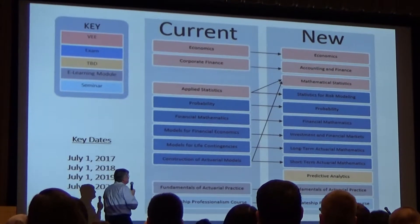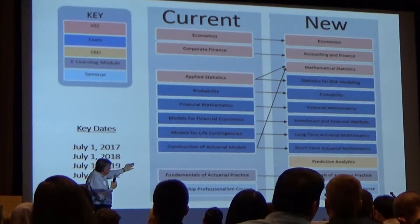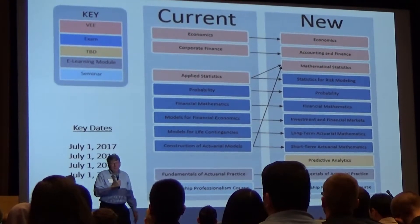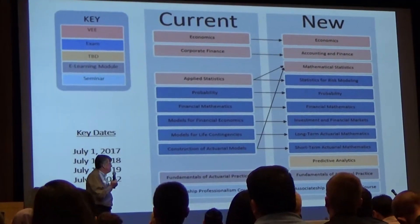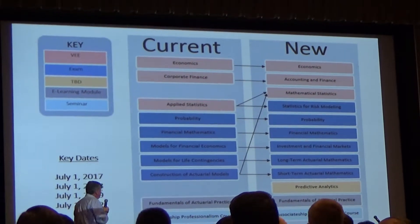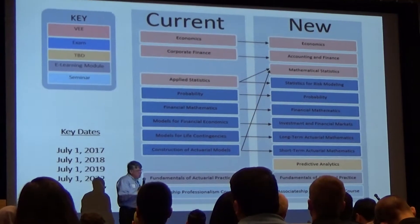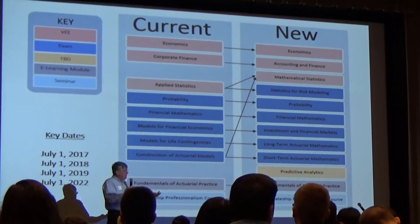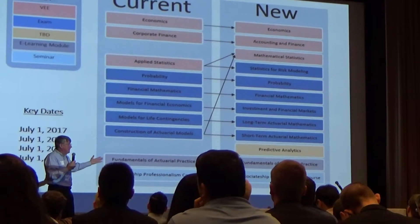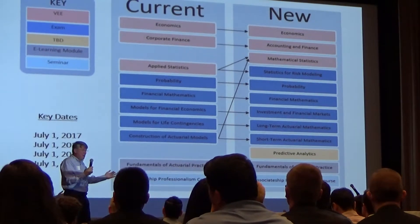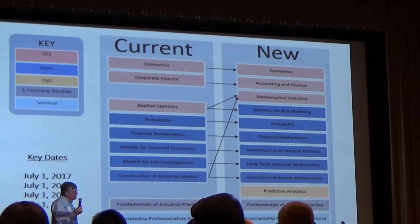Accounting is being added to the second VEE. You also notice there are 10 things on the current side and 12 over there — two more. Bottom line: it means more work. It's probably going to take longer to become an ASA because there are two extra components. Applied Statistics — regression and time series — is moving over to Statistics for Risk Modeling, which will include regression, time series, some predictive analytics, and mathematical statistics. Many of you may have already taken a math stat course in school; if you can find the curriculum, you could probably get credit for it. Statistics for Risk Modeling, or SRAM, is a new exam — the syllabus has not been published yet. For all these changes, the syllabus will be published at least six months prior to the first exam.